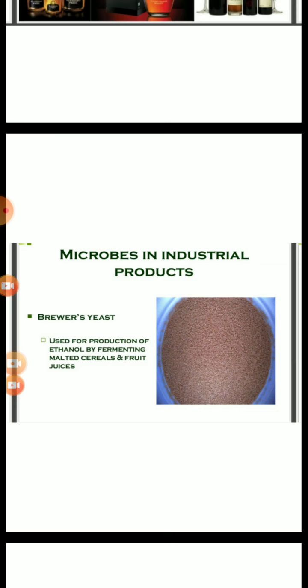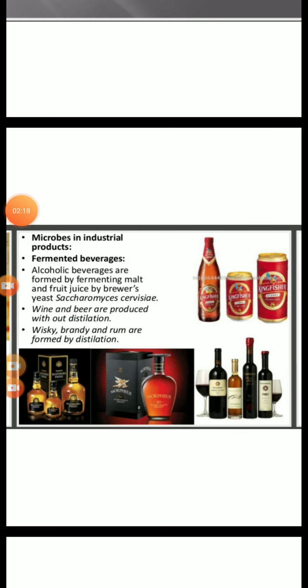Saccharomyces cerevisiae is the brewer's yeast. Depending on the type of raw material used for fermentation and the type of processing — that is, with or without distillation — different types of alcoholic drinks are obtained. Wine and beer are produced without distillation, whereas whiskey, brandy, and rum are produced with distillation.